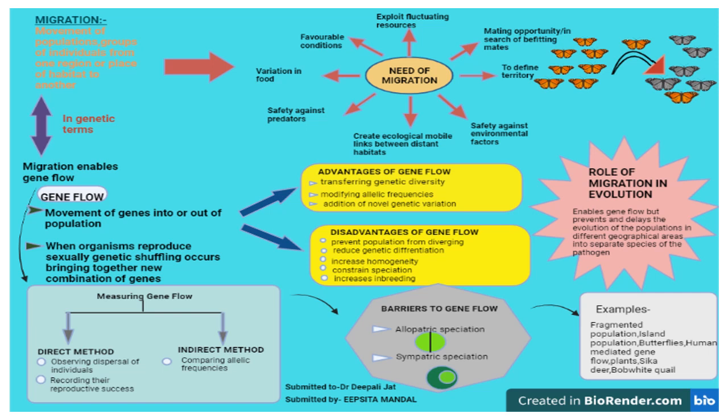From this discussion we have understood that migration enables gene flow. Due to migration into different geographical areas, populations can split into separate species. When a new gene is introduced to a particular place, the possibility of different genetic diversity is restricted, so constraining of speciation is also occurring. This increases the homogeneity of that particular population, increases inbreeding, and thus genetic differentiation is reduced. That is the role of migration in evolution.